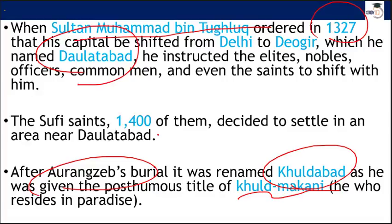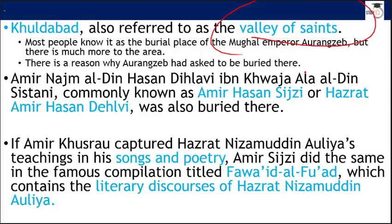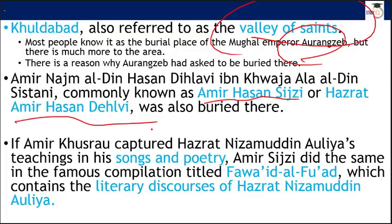When Sultan Tughlaq declared the transfer of the capital from Delhi to Daultabad, he was accompanied by common men and saints alike. Nearly 1,400 Sufi saints migrated to Daultabad, and most of them were buried there. That is why Khuldabad is known as the 'Valley of Saints' — not just because of Aurangzeb, but because of these 1,400-plus saints. The dargah of Amir Hassan Siji, also known as Hazrat Amir Hassan Dehlvi, is also located there.